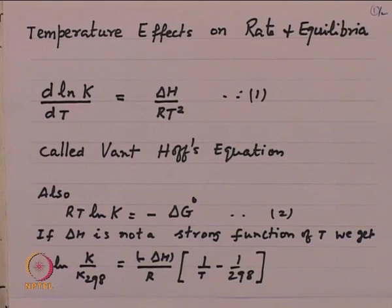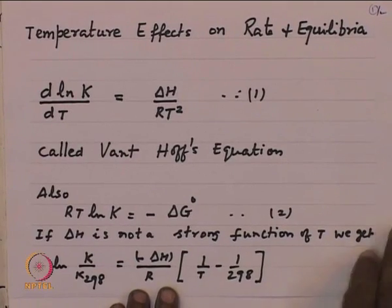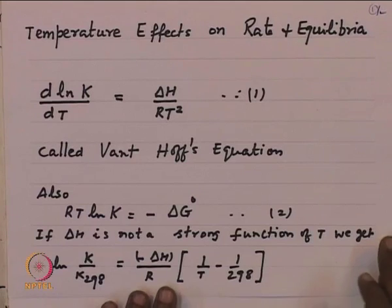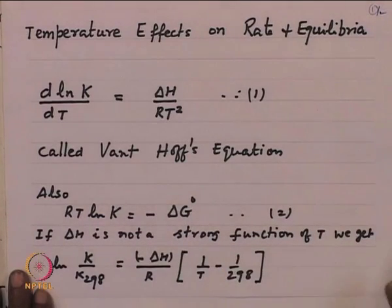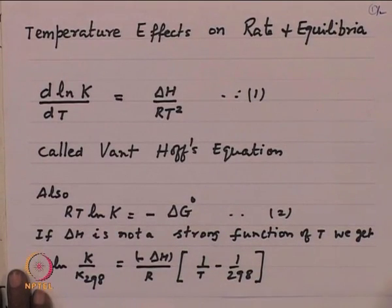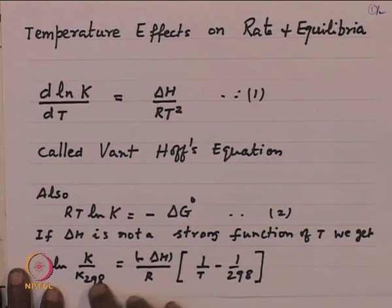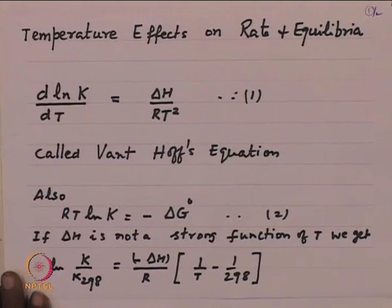Delta H is heat of reaction. We also know from basic thermodynamics that RT ln K equals minus delta G, which is the standard free energy of formation. So this is another relationship we might use — if you know the standard free energy of formation, you can find K at a given temperature. That is how K₂₉₈ comes in, and you can get the value of K at any other temperature using this relationship.